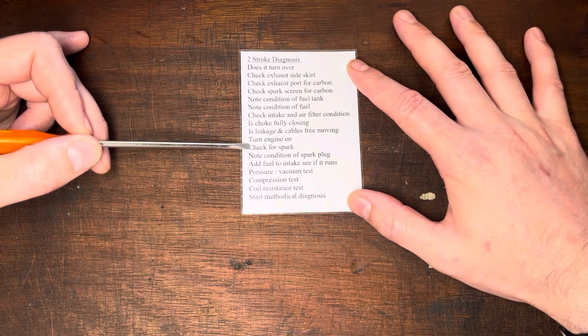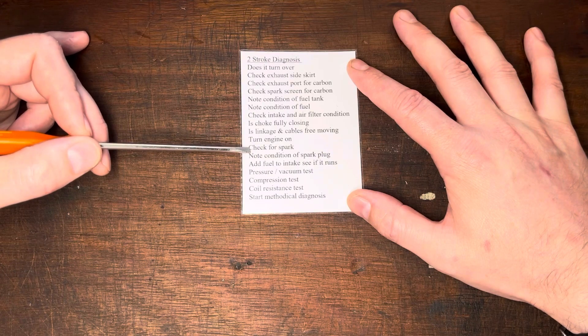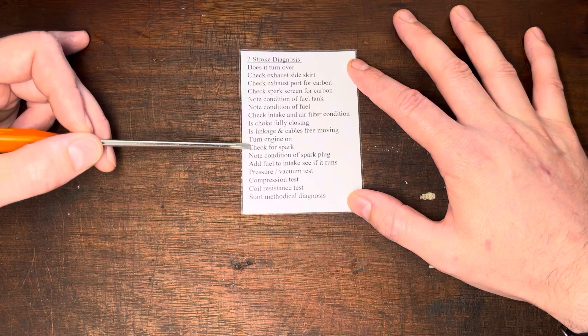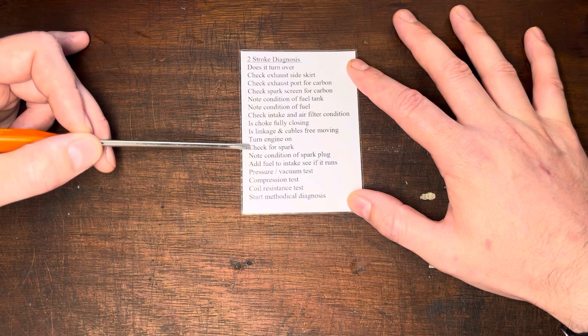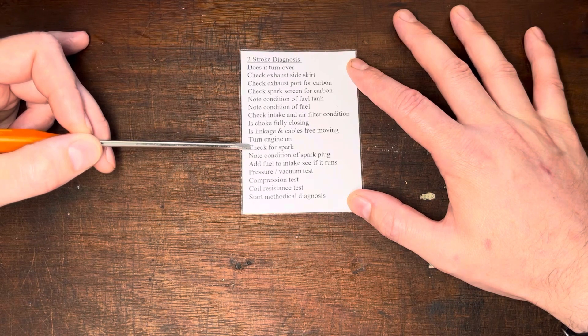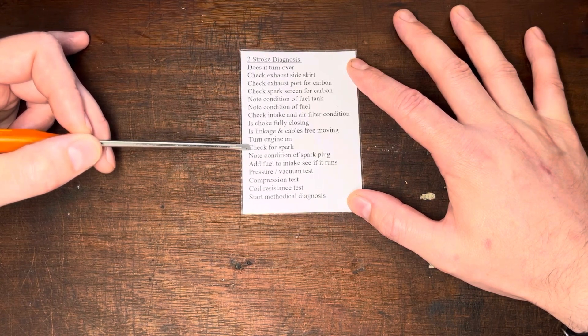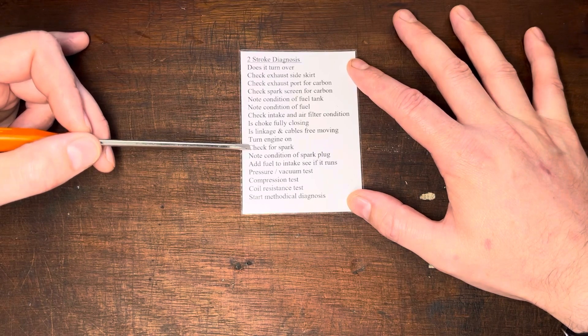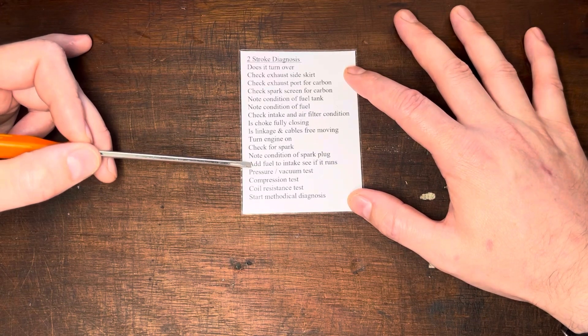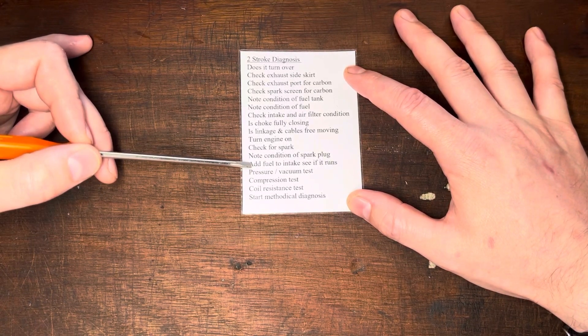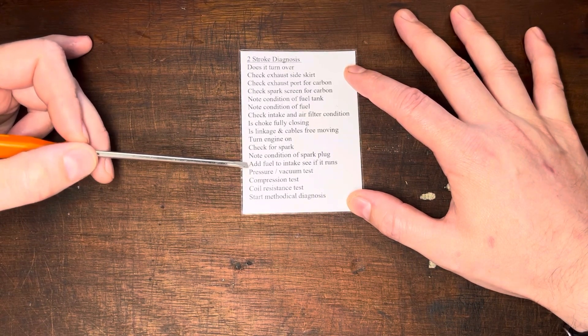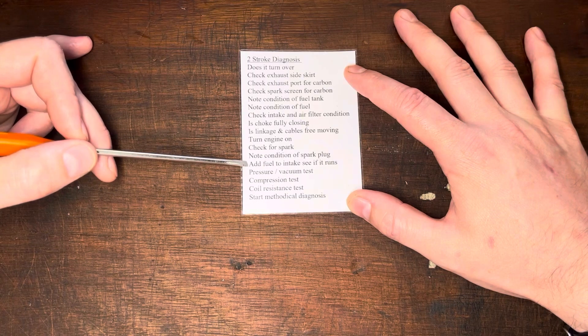Pop the engine on, take the spark plug out and just note the condition of the spark plug while you're there. So those two are kind of together. But yeah, note the condition of the spark plug. Make sure there's no carbon on there or there's minimal carbon. Gives you an idea of what's the plug color like, the brand, the make of plug. Is it right for the engine? Of course, check spark as well. And then add fuel to the intake and see if it runs.